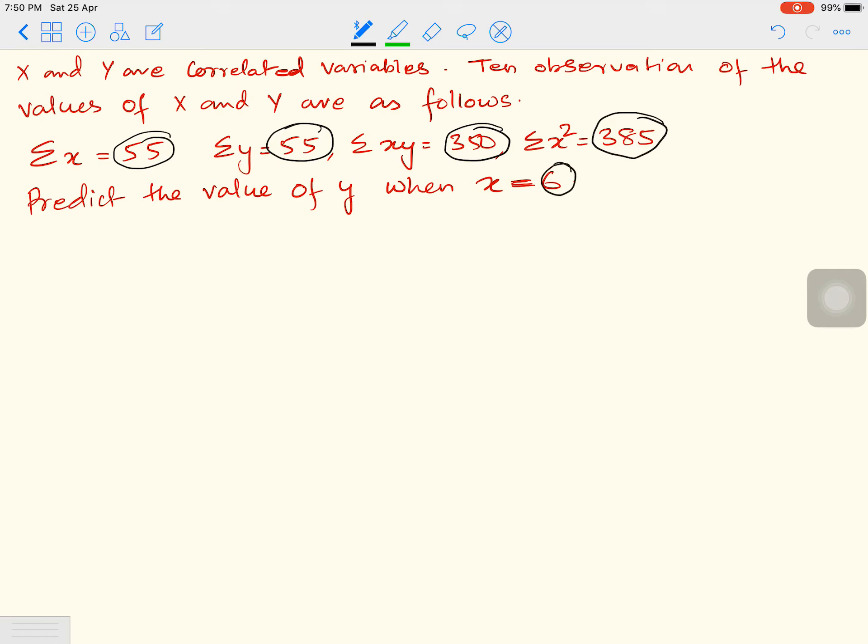So this sum is about prediction. We will find the required regression equation and then predict. Since we have to predict Y when X equals 6, when you have to predict Y, what do you need? You need Y on X.